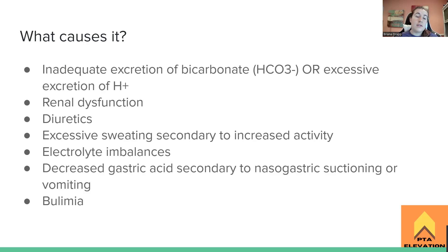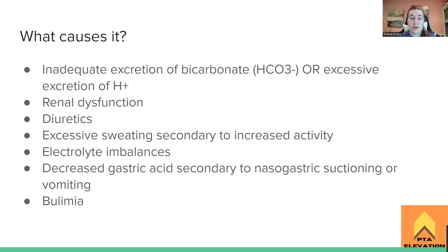This can happen due to renal dysfunction — that's why kidneys are really important. Someone going into kidney failure could end up dying because all their electrolytes are imbalanced. Diuretics can cause this as well — Lasix is the main one. Those water pills can cause electrolyte imbalances leading to metabolic alkalosis, so we want to make sure we're not over-excreting electrolytes like potassium, sodium, and calcium, which are all really important.